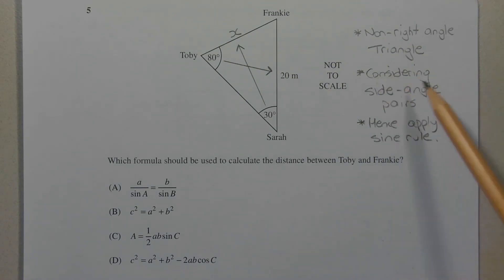And because we're considering side angle pairs in a non-right angle triangle, we need to apply the sine rule. Now option D is the cosine rule, so the answer is not option D. Option A is the sine rule, and that's the only viable option left, therefore the answer is option A.